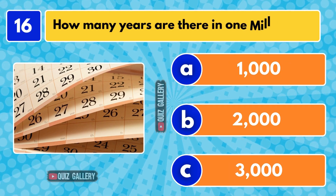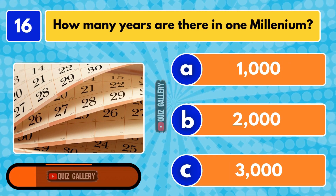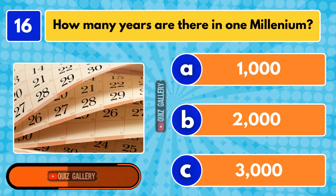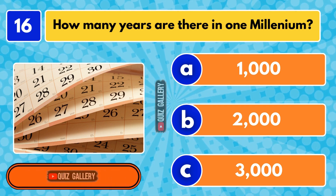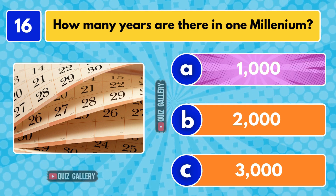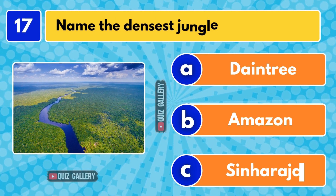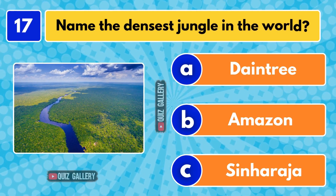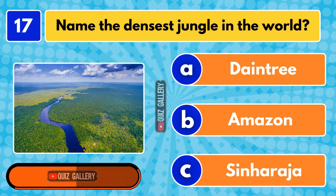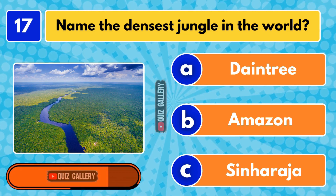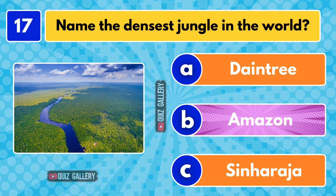How many years are there in one millennium? 1,000 years. Name the densest jungle in the world. Amazon rainforest.